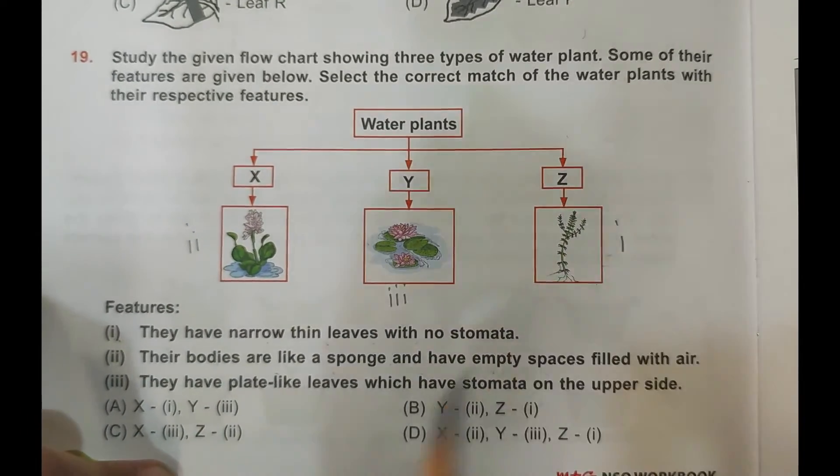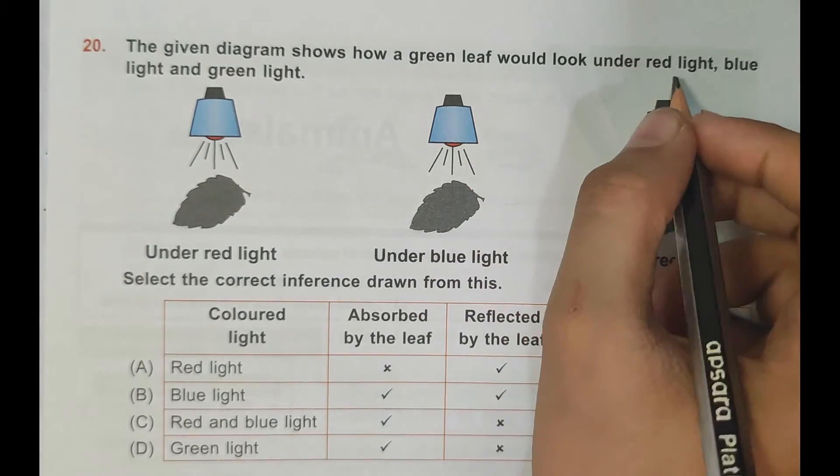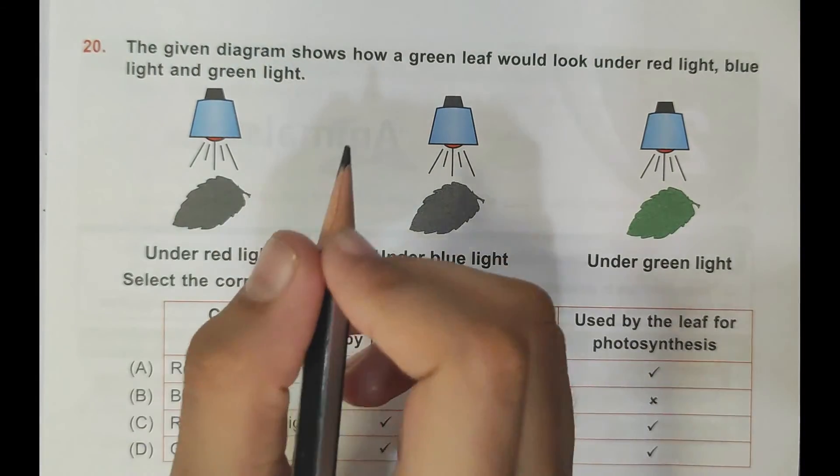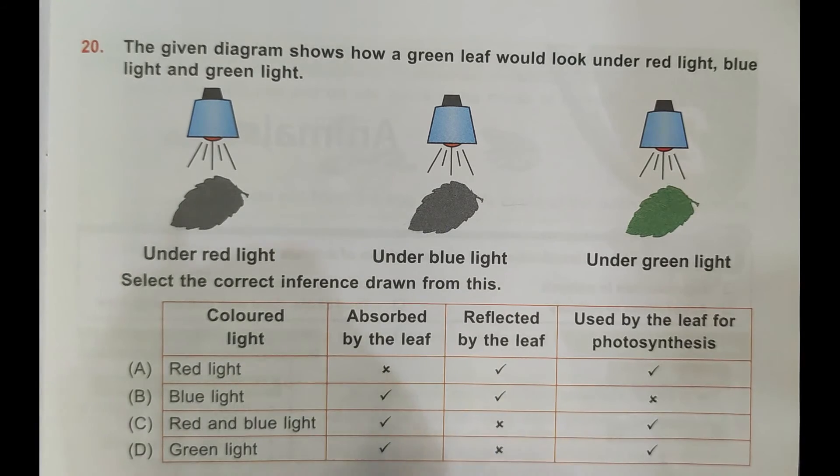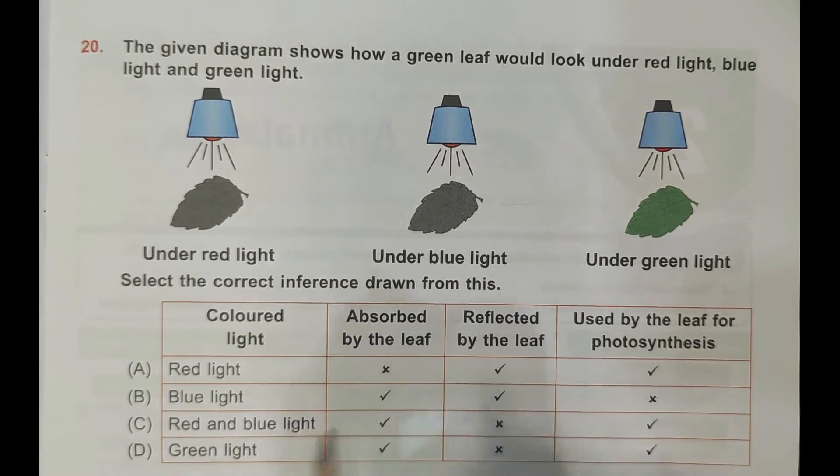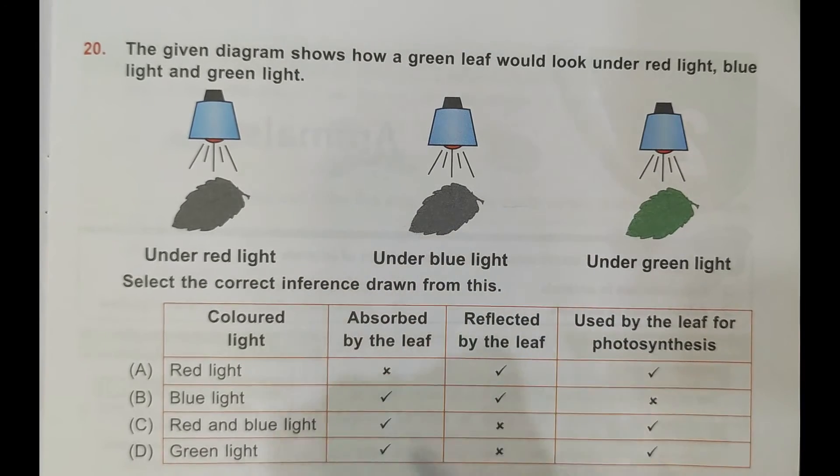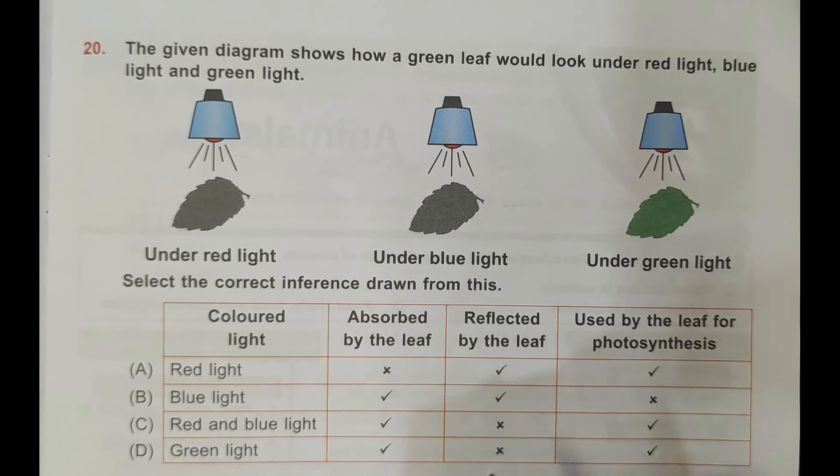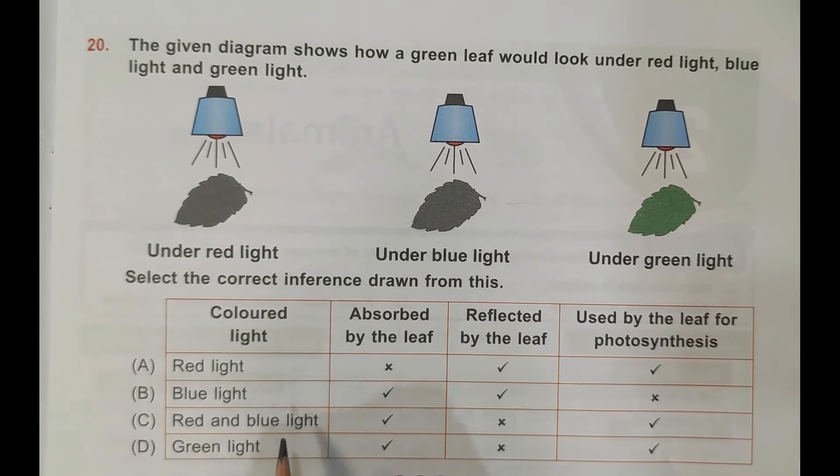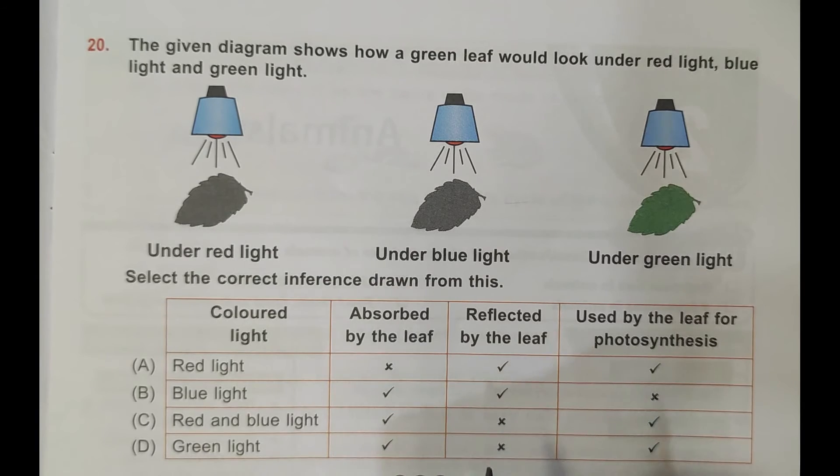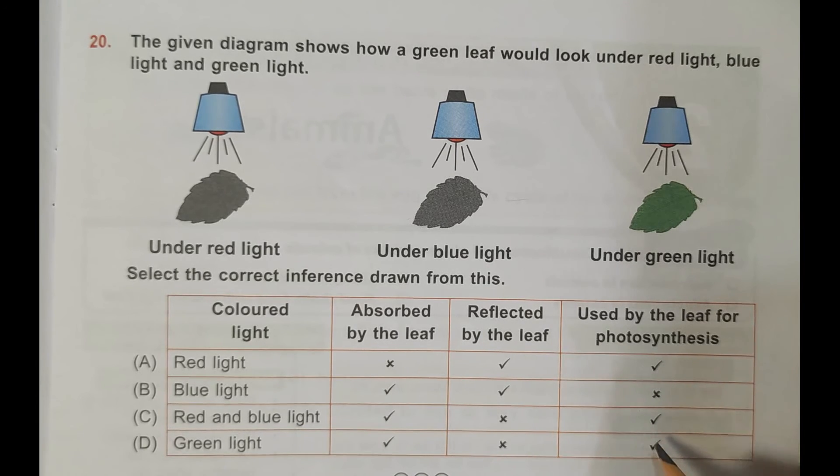The given diagram shows how a green leaf would look under red light, blue light, and green light. Now let's come to the options. Red light: see here, red light is absorbed by the leaves so it is in black. Absorbed by the leaf, here is cross, so it is wrong. Blue light: it is absorbed by the leaves, yes that's true. Then reflected by the leaf - it is not reflected by the leaf and here is true, so it is wrong. C: red and blue light are absorbed by the leaves - here is true. Then reflected by the leaf - here is cross. Then used by the leaf for photosynthesis - yes that is true because both lights are very efficient. So C is the correct answer.